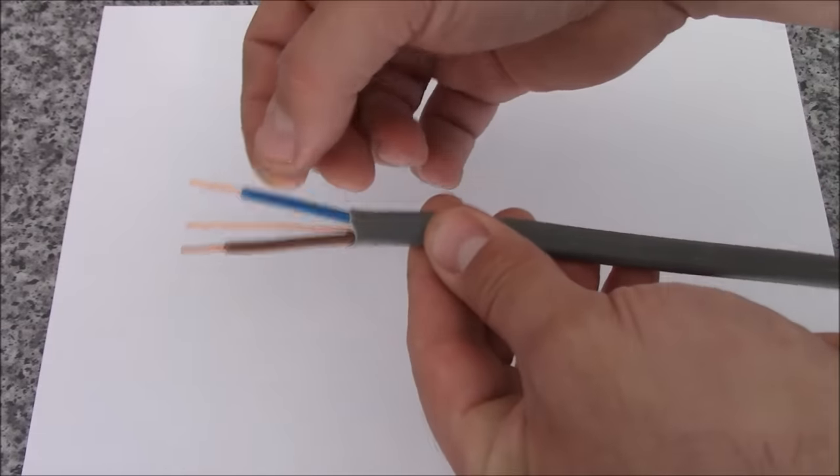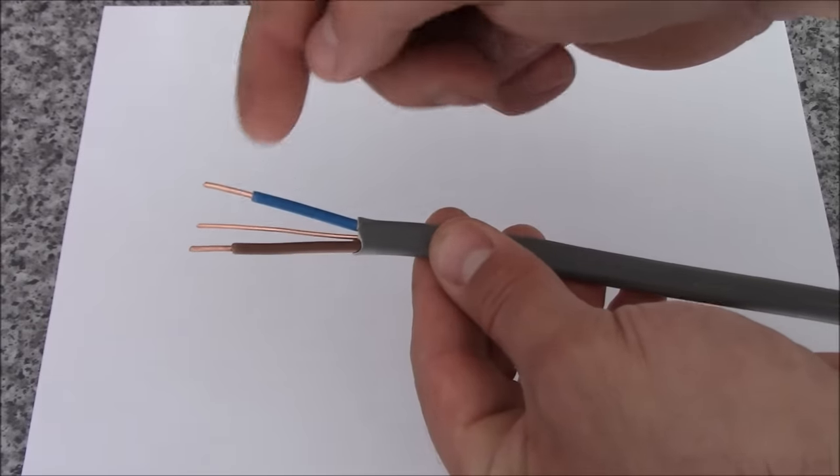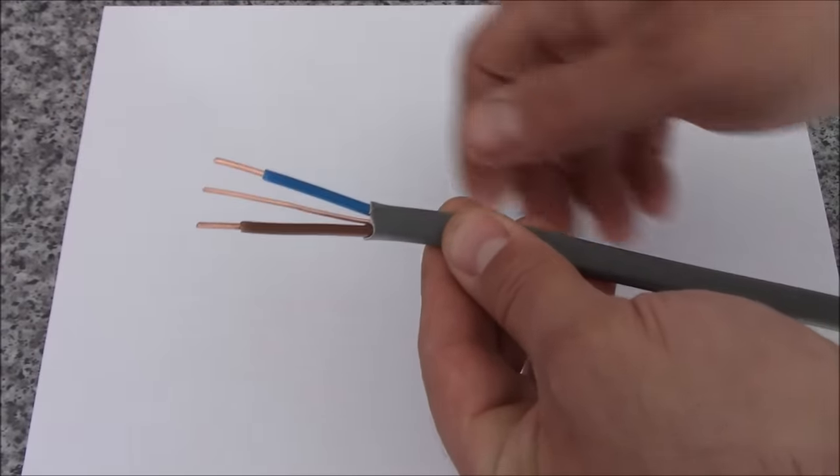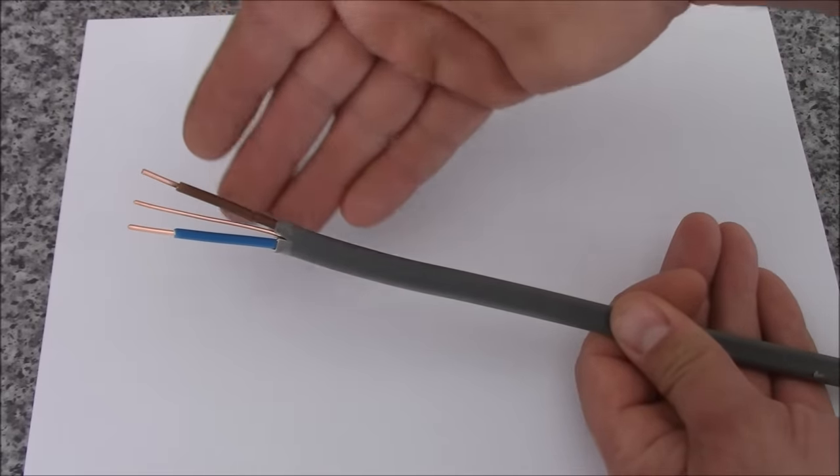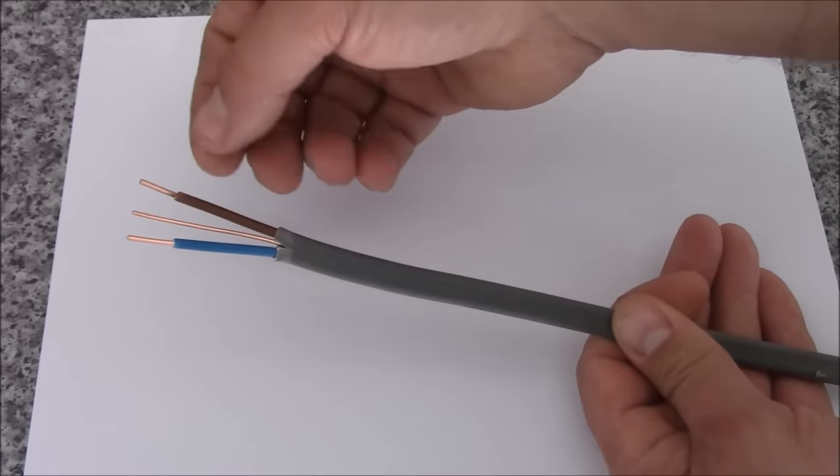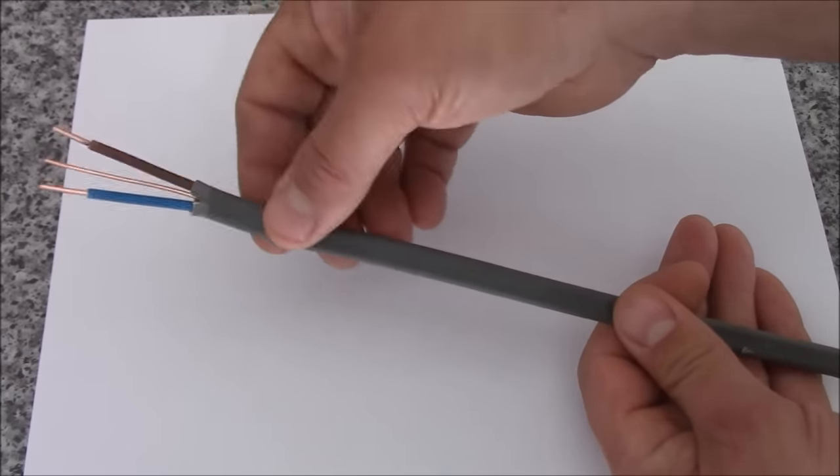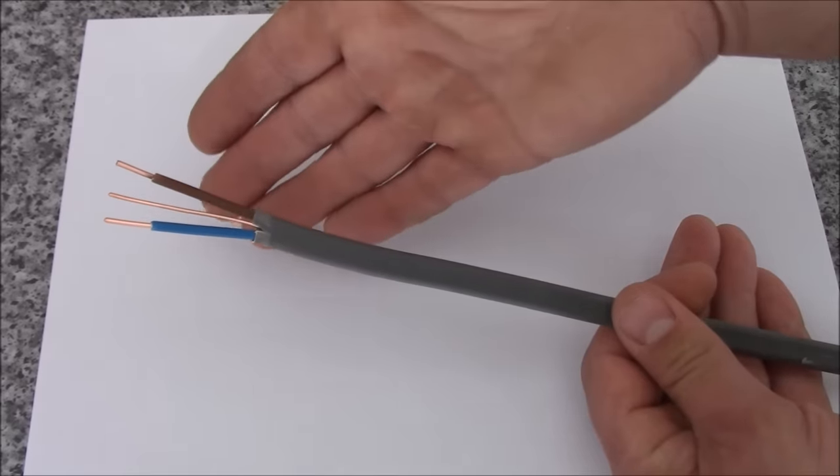Basically it's got three conductors in it. As you see, neutral the blue one, line conductor the brown one and the bare one is the earthing conductor. So all the conductors have some resistance, there's some energy loss. So when the current flows through the conductor they start warming up and if you choose too small cable for the design current, obviously they can be overheated.